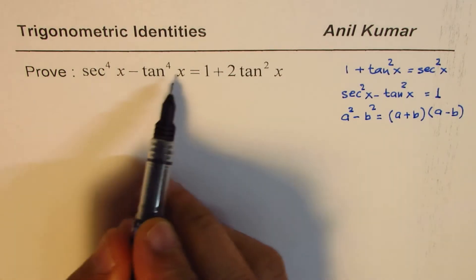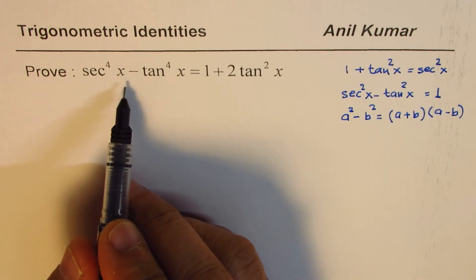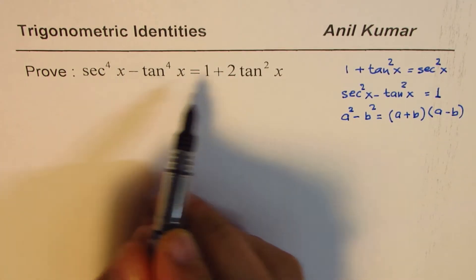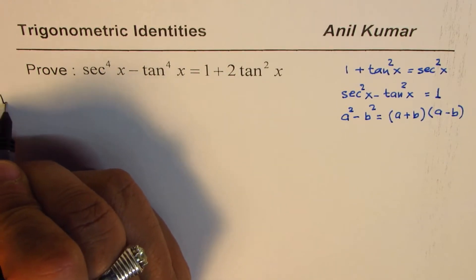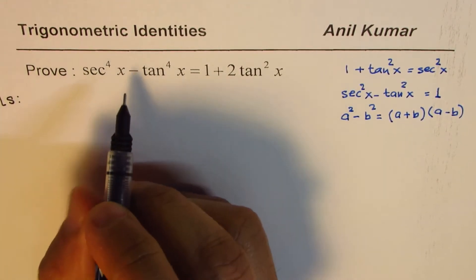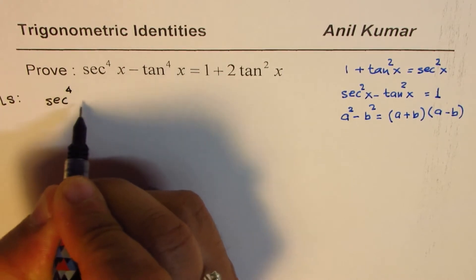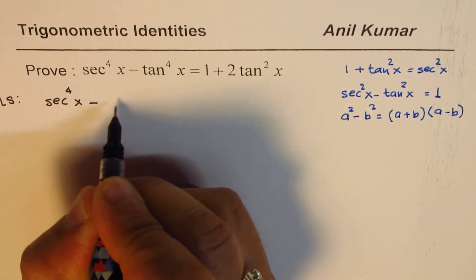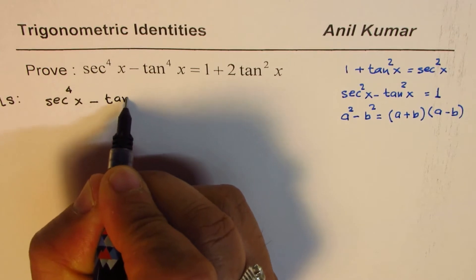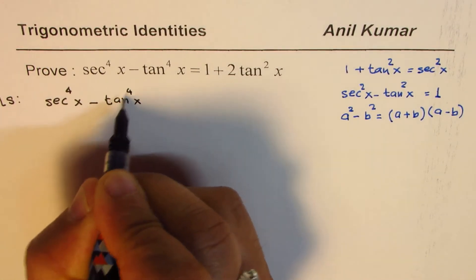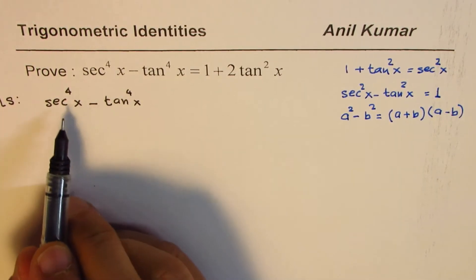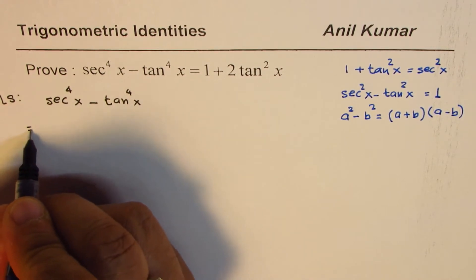Let's begin from the left side, seems to be more complicated, can be simplified as the right side. So we'll begin by using the left side which is secant to the power of 4x minus tan x to the power of 4. As you can see we could write this as difference of squares.